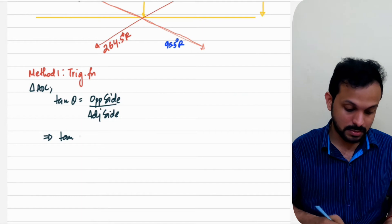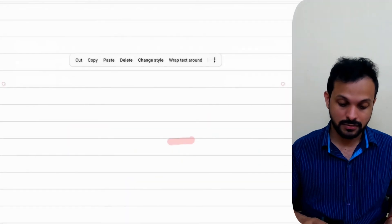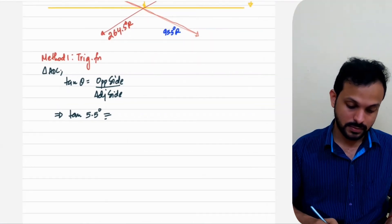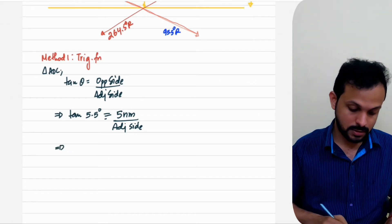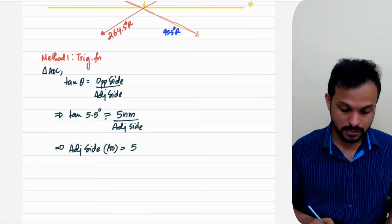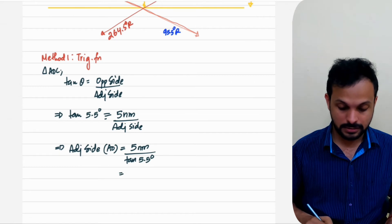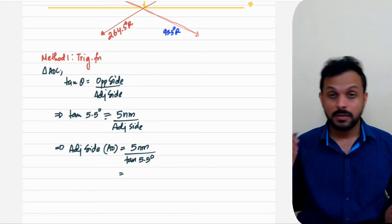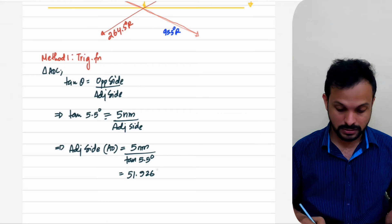Theta is the maximum permissible error, given as 5.5 degrees. The opposite side is the 5 nautical mile boundary. Therefore, the adjacent side AO equals 5 nautical miles divided by tan(5.5°). Using your scientific calculator in degree mode: 5 divided by tan(5.5) gives you 59.926 nautical miles.